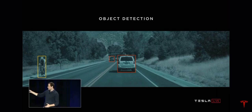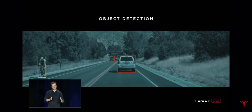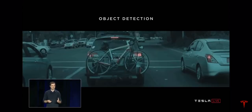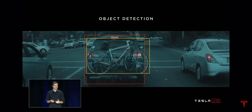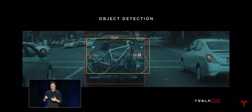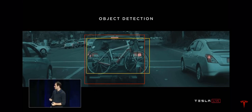You can train your neural network on this, but if you're not careful, the neural network will make mispredictions in some cases. As an example, if we encounter a car that has a bike on the back of it, the neural network would actually create two detections — a car detection and a bicycle detection. And that's actually kind of correct, because both of those objects actually exist.